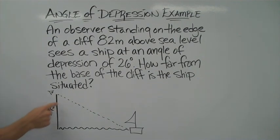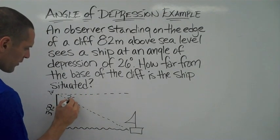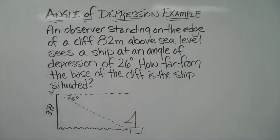The biggest mistake would be to put 26 here. It's not. Remember, 26 degrees is the angle made with the horizontal. So the angle of depression is 26 degrees there. How far from the base of the cliff is the ship situated?